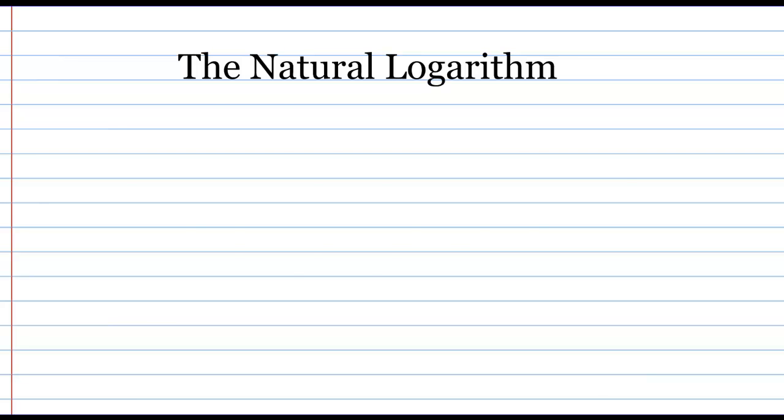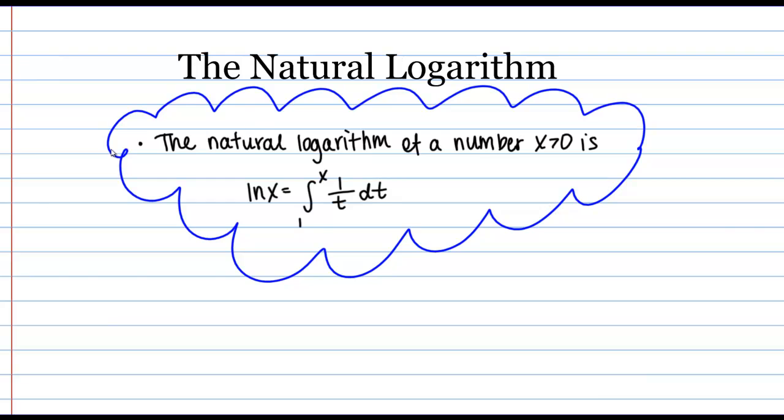Let's start with the definition. So in this definition, we're actually defining the natural logarithm as a definite integral. The natural logarithm of a number x greater than 0 is given by ln(x) equals the definite integral from 1 to x of 1 over t dt.